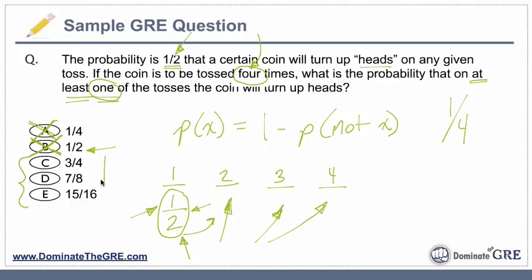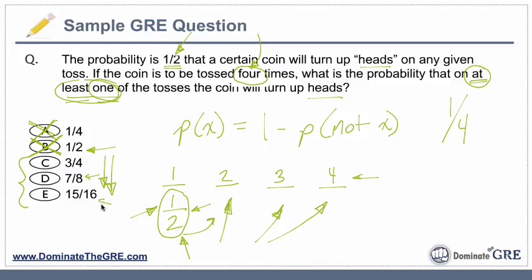The bottom line is, it's pretty likely that you are going to get heads if I give you four chances, and you only have to get at least one. So for that reason alone, if you were going to guess — because you're getting four chances — I'd venture towards the higher probability: seven-eighths or fifteen-sixteenths. If I were guessing, I'd probably eliminate answer choice C as well.